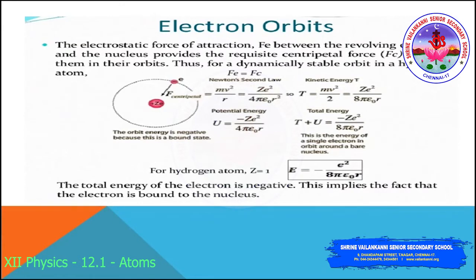From the force balance, the kinetic energy expression gives MV² / R equal to Ze² / (4πε₀R²). Taking kinetic energy T as half MV², we get T equal to Ze² / (8πε₀R).